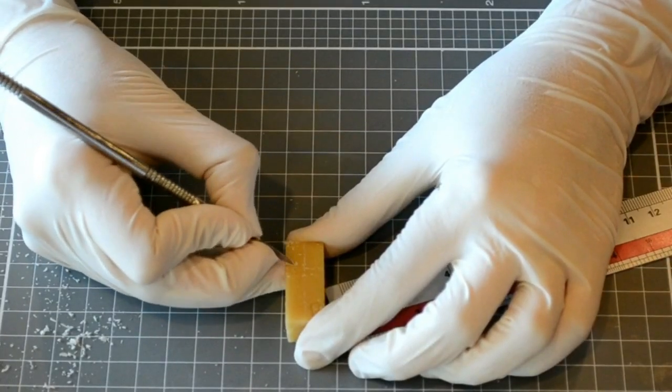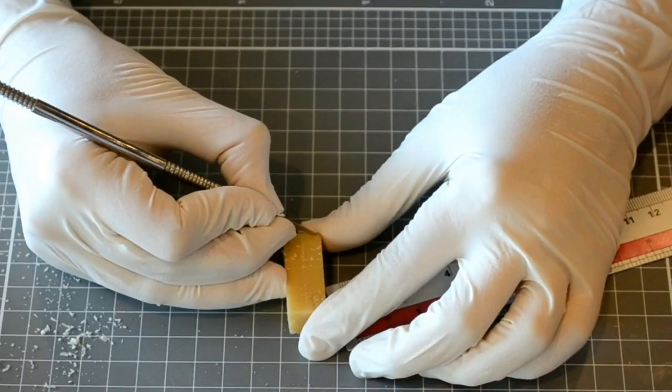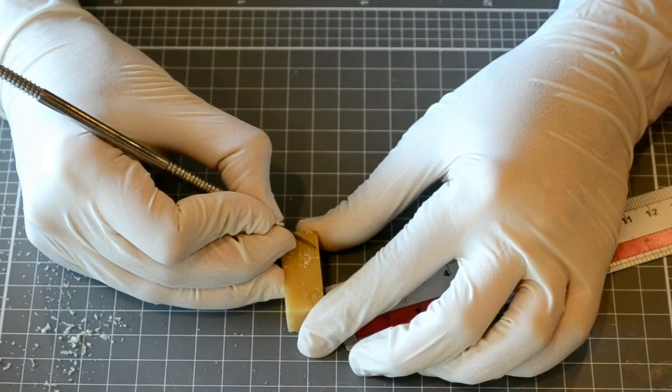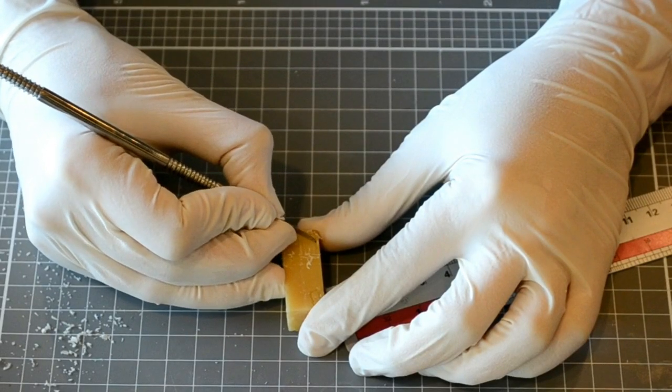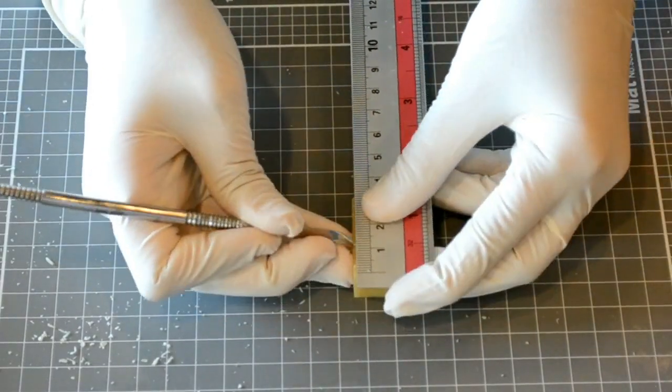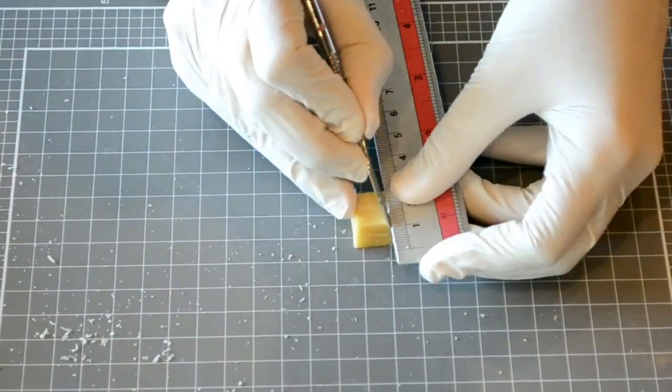Keeping in mind that the mesial outline of the central incisor is straight, while the distal outline is more convex. Remember that the crest of curvature is located mesially on the incisal third and distally on the middle third. Repeat the same steps to carve an outline on the lingual aspect.